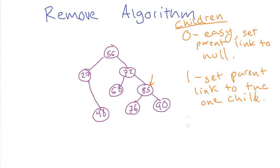Then we have our last case, which is when we have two children, and this one is the hardest because now we can no longer use either of the two solutions we did previously. We can't just set this to null like in solution zero, because then we lose the 76 and the 90. Likewise, we can't have 72 adopt the 76 and the 90 node, because then 72 would be left with three children — and we can't do that. Moreover, the 76 and the 90 are both bigger than 72, so even if 72 only had one child, we couldn't just do that either.